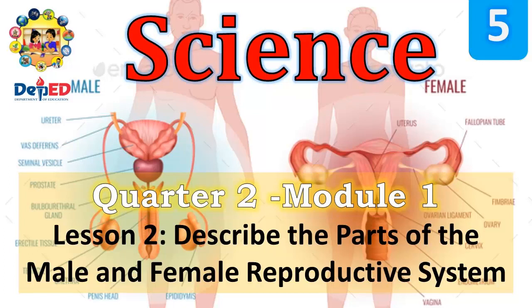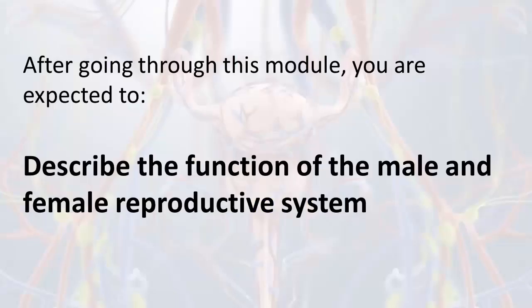Science Grade 5, Quarter 2, Module 1, Lesson 2: Describe the Parts of the Male and Female Reproductive System. After going through this module, you are expected to describe the function of the male and female reproductive system.